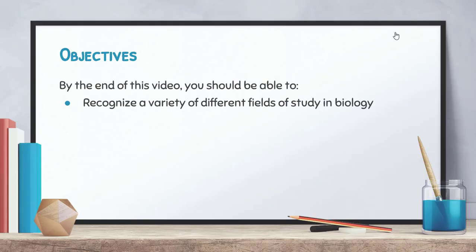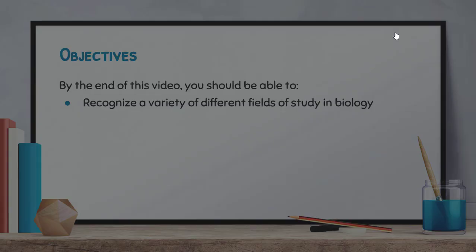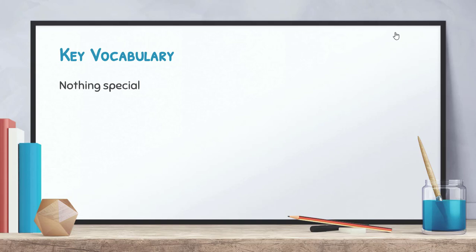Hopefully by the end of this video you'll be able to recognize that there are a variety of different fields of study in biology. There are lots of different really specific niche topics that one can go through and study when looking at biology at a deeper level. Some of these things will pop up as we continue on through the course of the school year. There are no key vocabulary terms for this, so just kind of relax and enjoy. There will be some roots, some key root words that you'll notice pop up again and again, and we'll talk about those when we get there.